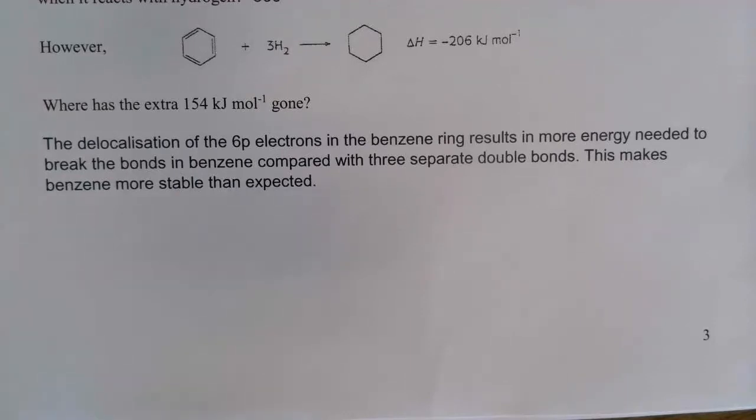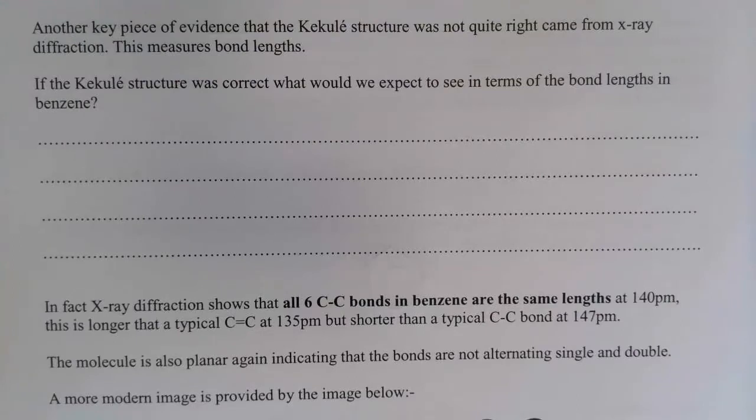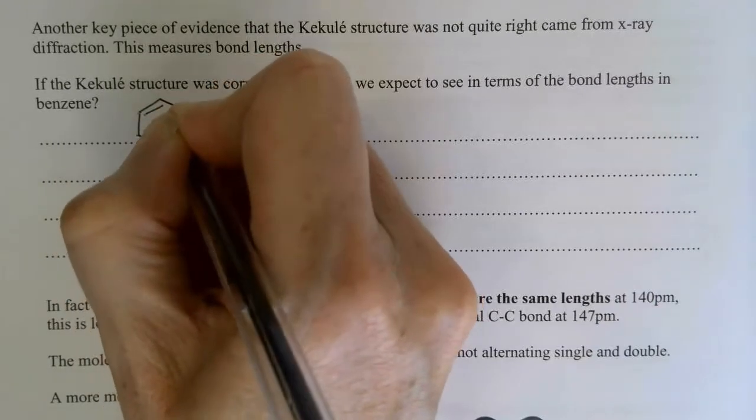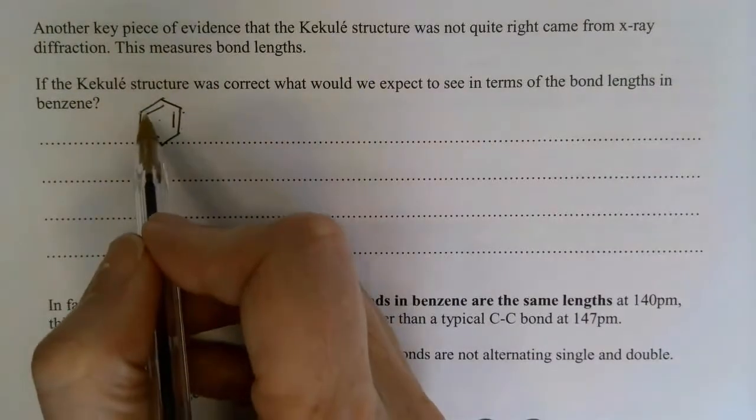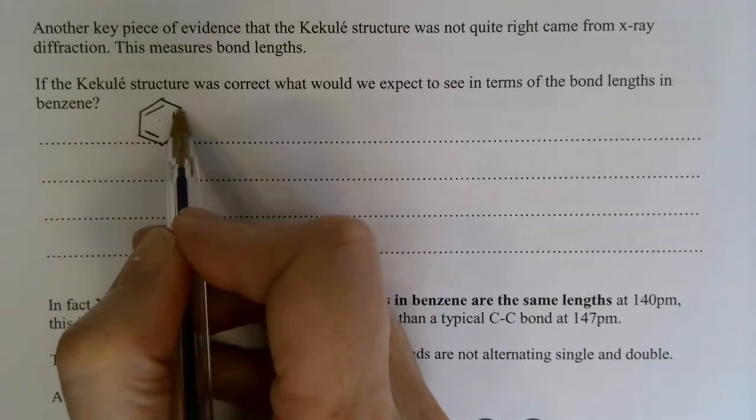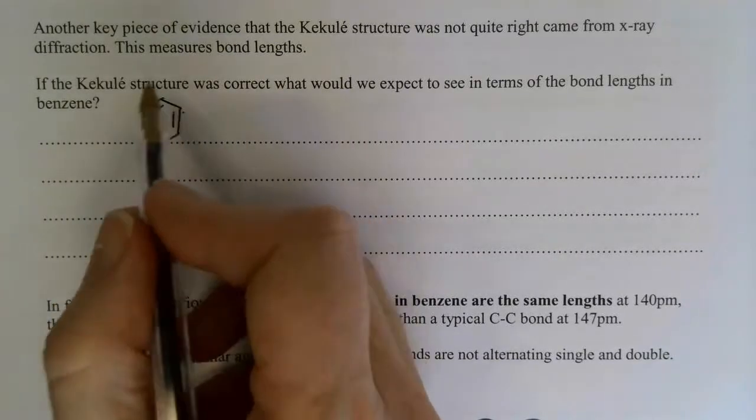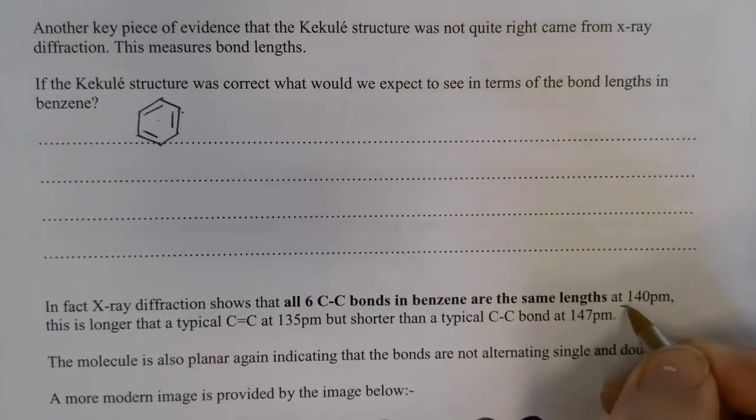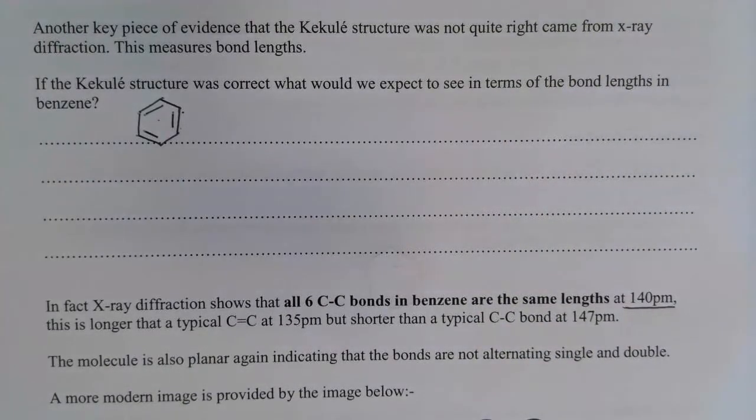And it makes benzene a very stable compound. Another piece of very important information came from X-ray diffraction. Now X-ray diffraction can measure the bond lengths. If you had a Kekule structure with alternating single and double bonds, you'd expect the double bonds to be shorter than the single bonds, so you'd have a short bond followed by a long bond, short, long, short, long, and you'd also expect this to be a non-planar structure. When they actually measured the X-ray diffraction, they found that all the bond lengths were the same and they were approximately 140 picometers. That was longer than a typical double bond but shorter than a typical single bond, and again it was a planar molecule.